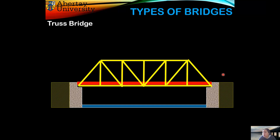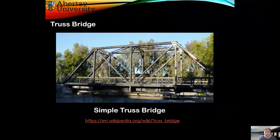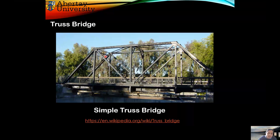Another type of bridge is called the truss bridge. The yellow section in the diagram is the truss bridge, which is basically a mixture of members that hold only tension or compression depending on where they are. This is a real-life simple truss bridge — you can see the steel members that carry and distribute the load.